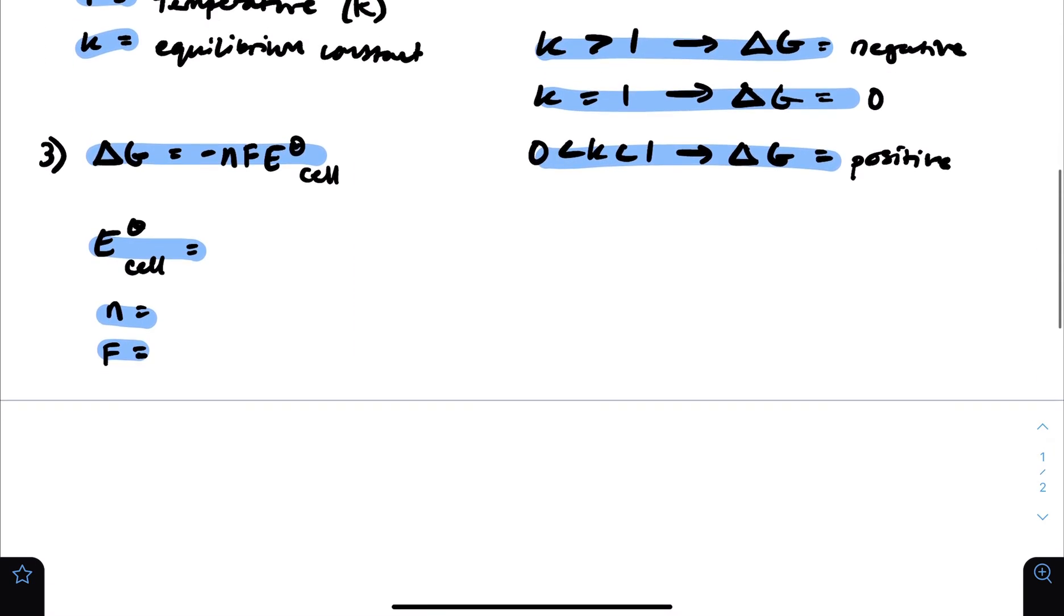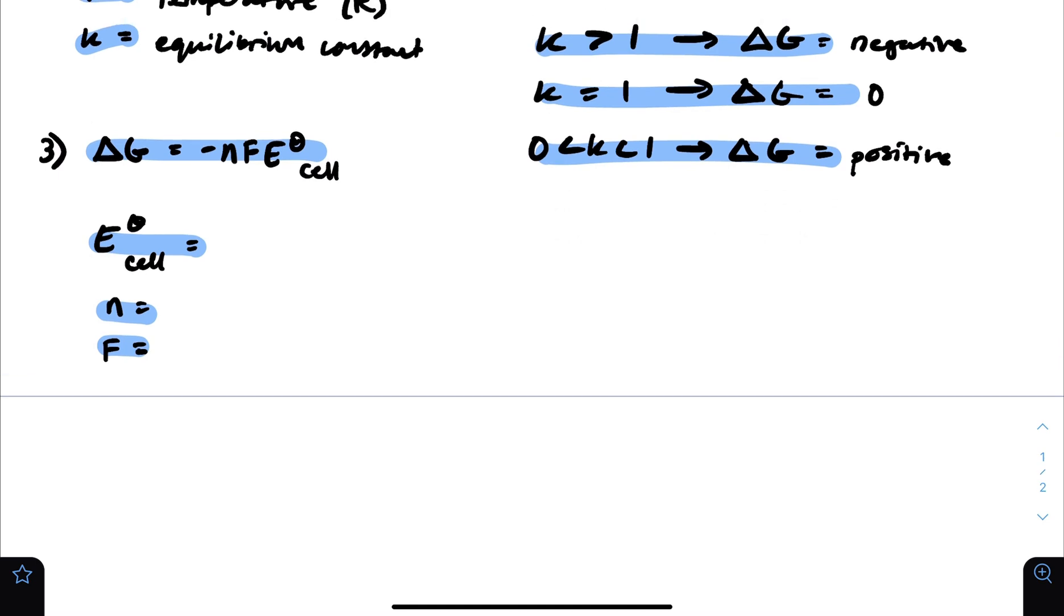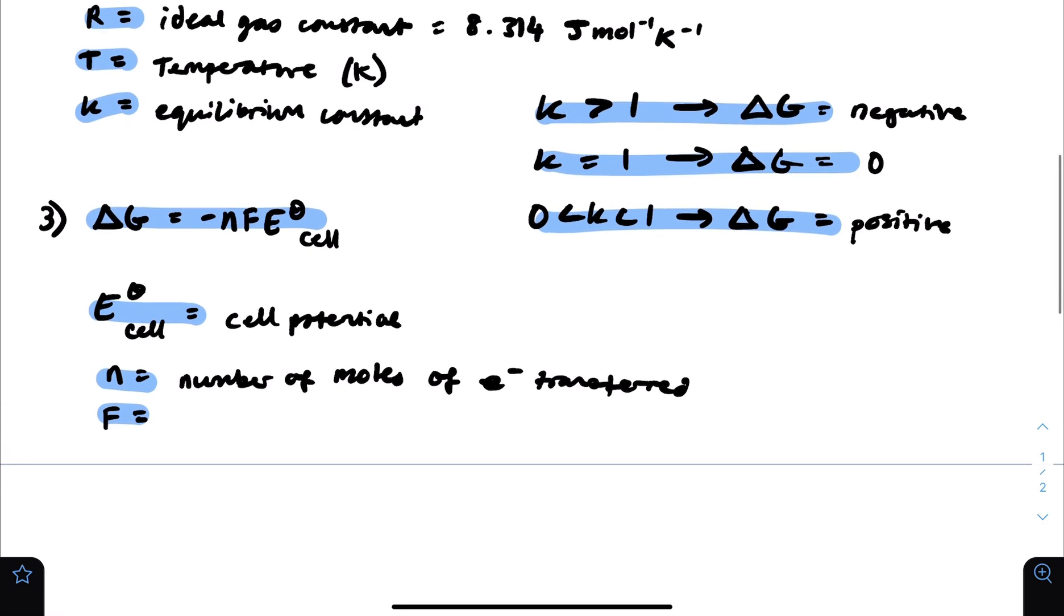Equation 3 is delta G equals negative nFE naught of the cell. E naught of the cell is basically the cell potential. This is covered a little bit more in electrochemistry. If you have a voltaic cell or an electrolytic cell, it will have a cell potential where you look at the reduction and oxidation reactions and therefore determine the E naught of the cell. And n is the number of moles of electrons transferred. It becomes obvious that this equation is mostly applicable to electrochemistry because it's to do with the exchange of electrons and the cell potential.